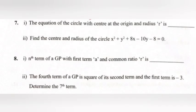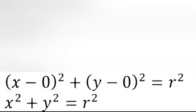Problem 7, part i: The equation of a circle with center at the origin and radius r is blank. Answer: (x - 0)² + (y - 0)² = r², which simplifies to x² + y² = r².